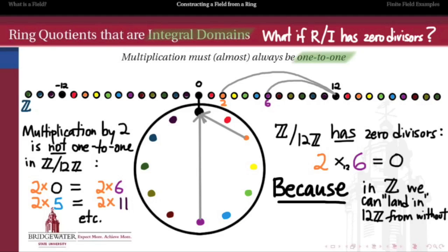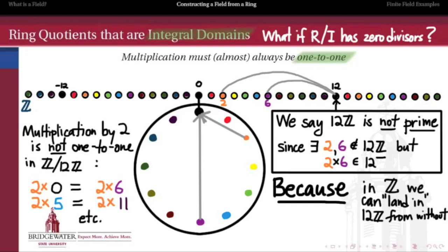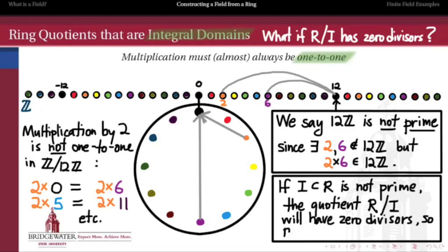Multiplication by 2 in the clock group is not one-to-one: 2×0 and 2×6 are both the same thing mod 12, and 2×5 and 2×11 are the same mod 12, and so on. Different elements map to the same place when we multiply by 2. The definition we make is that 12Z is not prime, because there exist two elements not in 12Z — for instance 2 and 6 — whose product does land in 12Z. Because of that, their images under the quotient are zero divisors in Z mod 12Z. So if we have an ideal that is not prime, the quotient by that ideal is going to have zero divisors, and so the quotient will not be an integral domain.